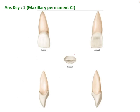Starting with the incisal view — although not given in the picture, we will cover every aspect. The crown and incisal margins are centered over the root, so from the incisal aspect you will not be able to see the root. The crown outline is bilaterally symmetrical, though in the maxillary central incisor the mesial profile can be slightly larger — a very slight enlargement of the mesial profile.